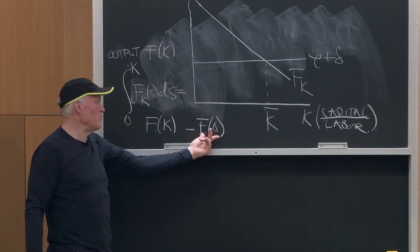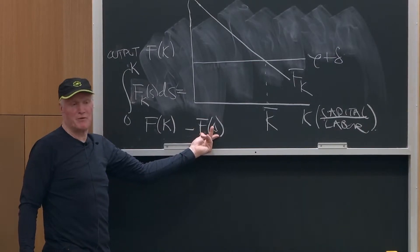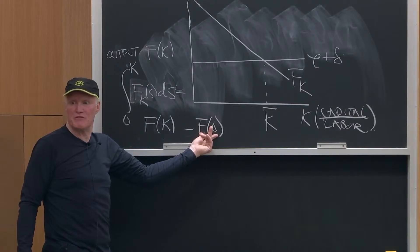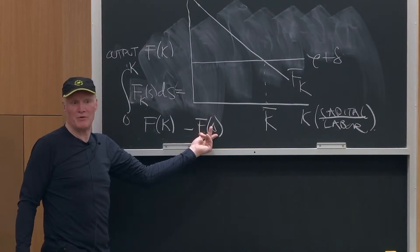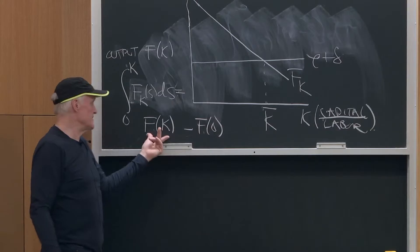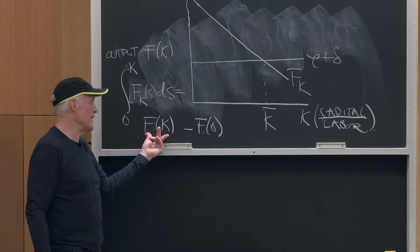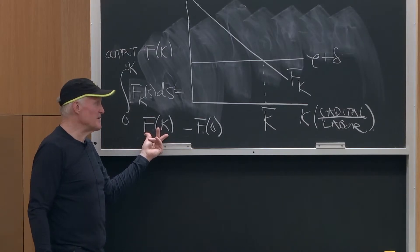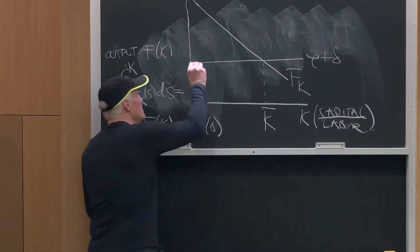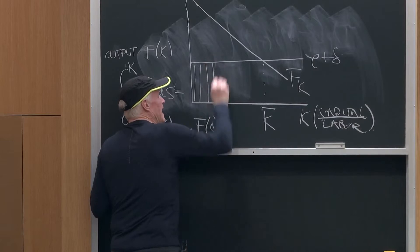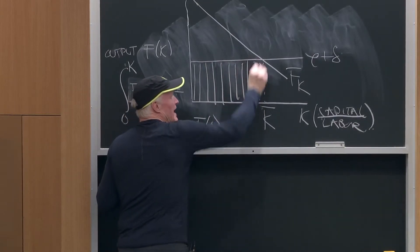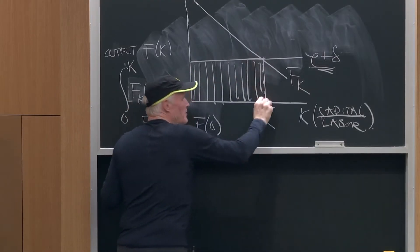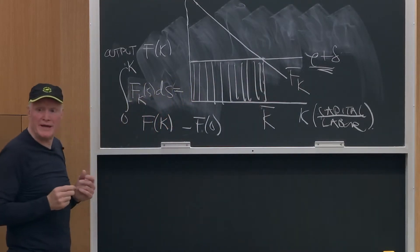F of 0 is how much output a unit of labor produces when it has no capital — the output of a unit of labor that has no capital to work with. F of K is the output of a unit of labor that has K units of capital to work with. Since there's constant returns to scale, this is the amount that's being paid to capital — because this is the rental price of capital times the amount of capital.